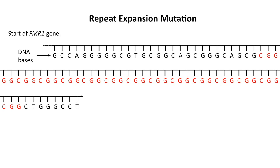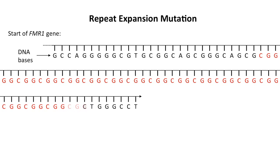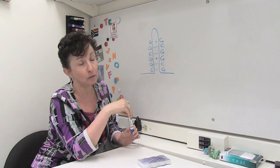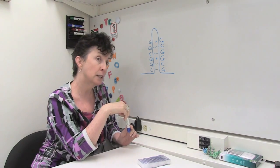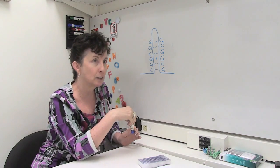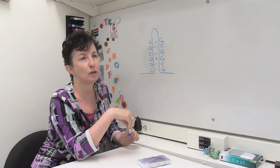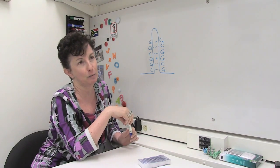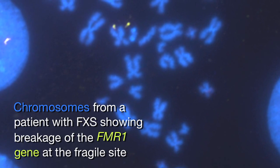The repeat expansion diseases are a group of disorders that all result from an intergenerational increase in the number of repeat units of a small DNA sequence. We've identified some genes that we know are important for either protecting the genome against expansion or are actually required for expansion. And now we're just trying to put together all those pieces and really understand the molecular details of that expansion mechanism.